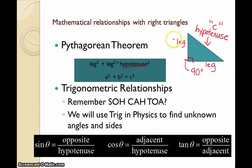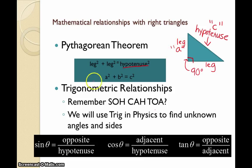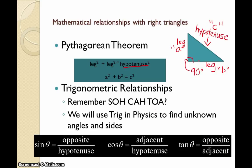One thing to mention: when it comes to the Pythagorean theorem, the hypotenuse has to be c, but in terms of the legs, this addition is commutative — it doesn't matter if a person uses this leg for a or this leg for a. In this case I'm going to put b here, but if these are switched you would still get the same answer.